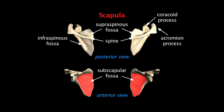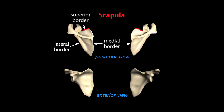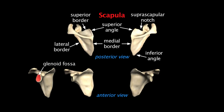The borders of the scapula are named for clarity. The edge closest to the vertebral column is the medial border, the diagonal edge is the lateral border, and the top is the superior border. Along the superior border near the coracoid process is the suprascapular notch, through which the suprascapular nerve travels. The angles of the scapula are also defined — the superior and inferior angles. The smooth depression on the lateral edge is the glenoid fossa, which is the point of articulation between the scapula and the head of the humerus.